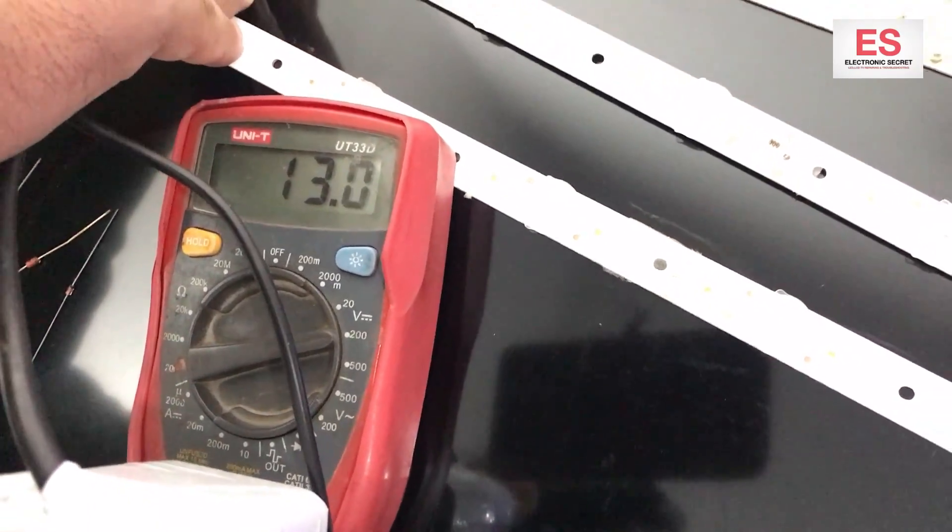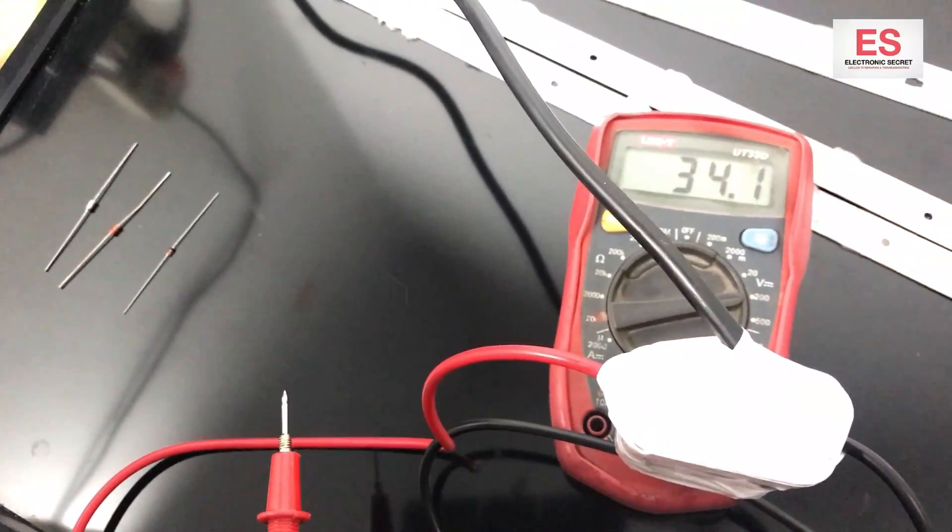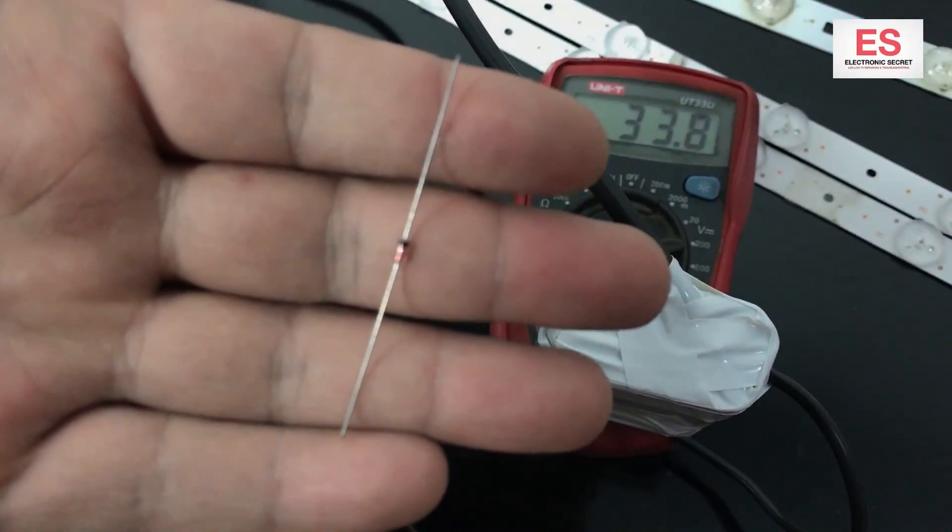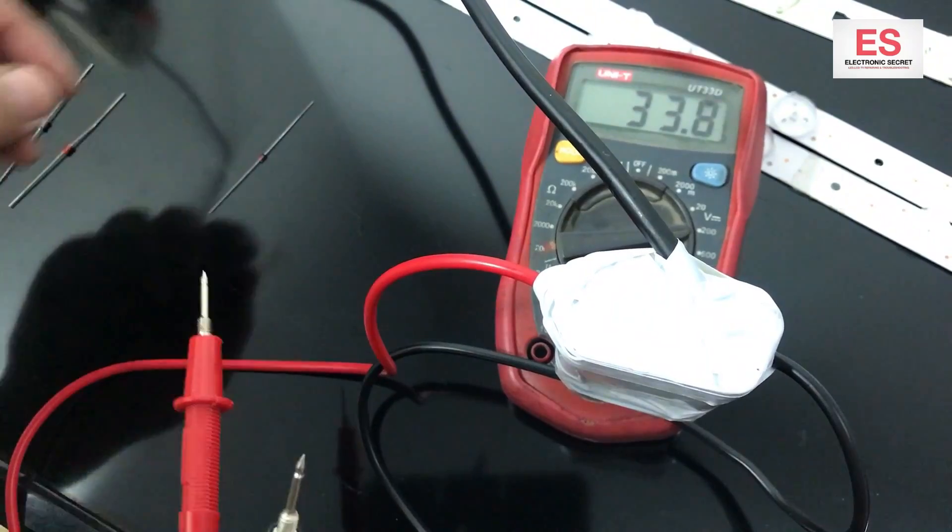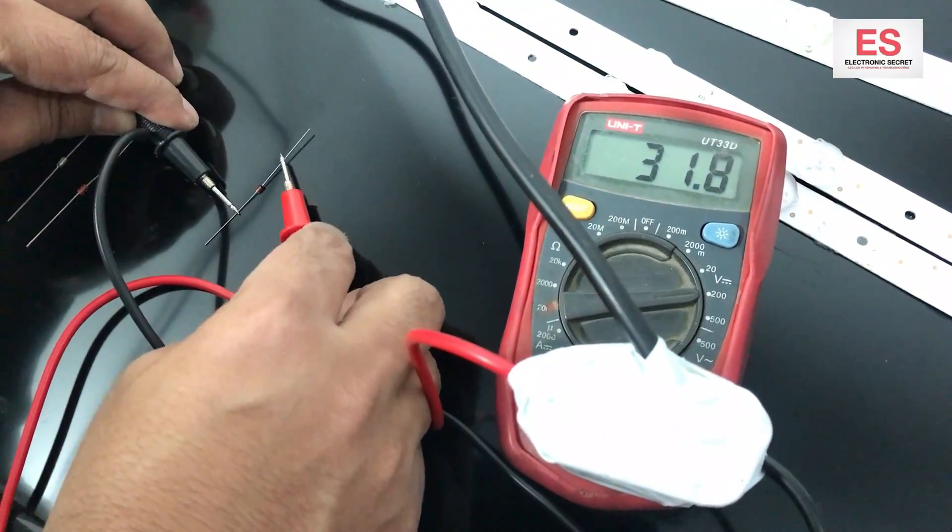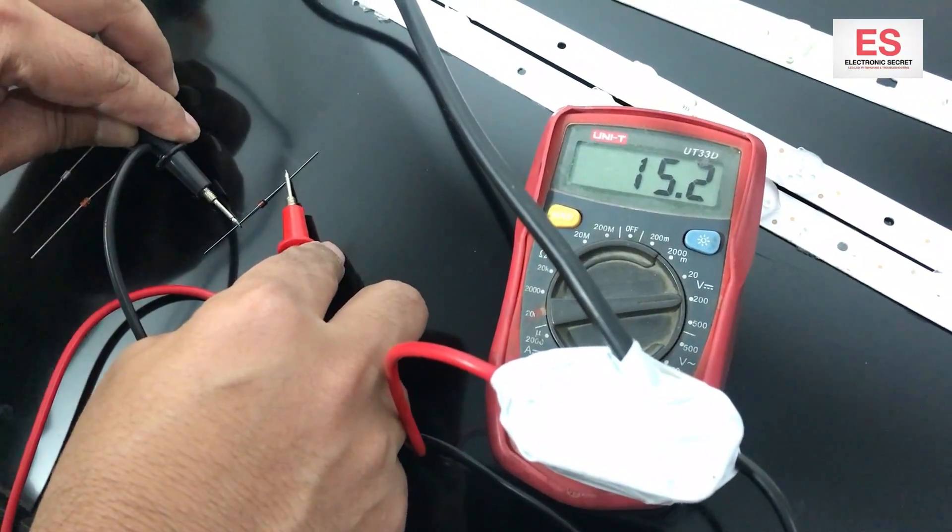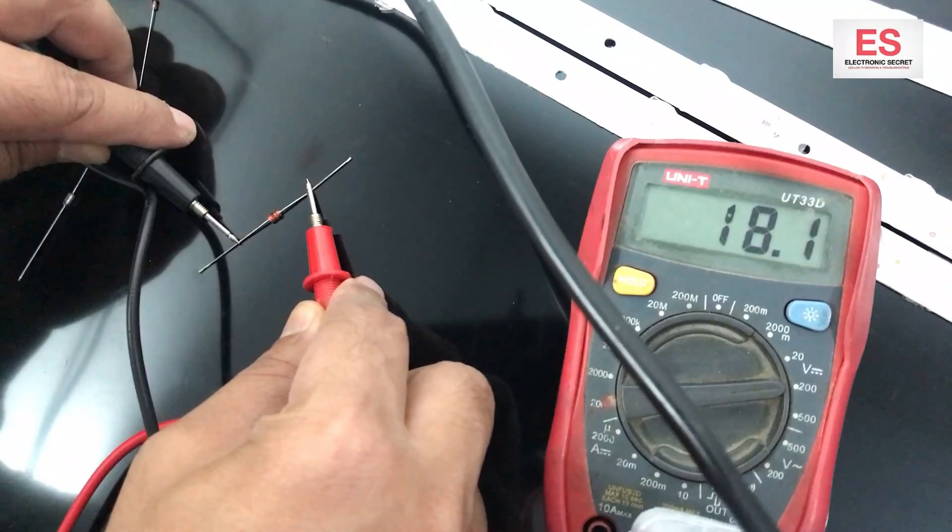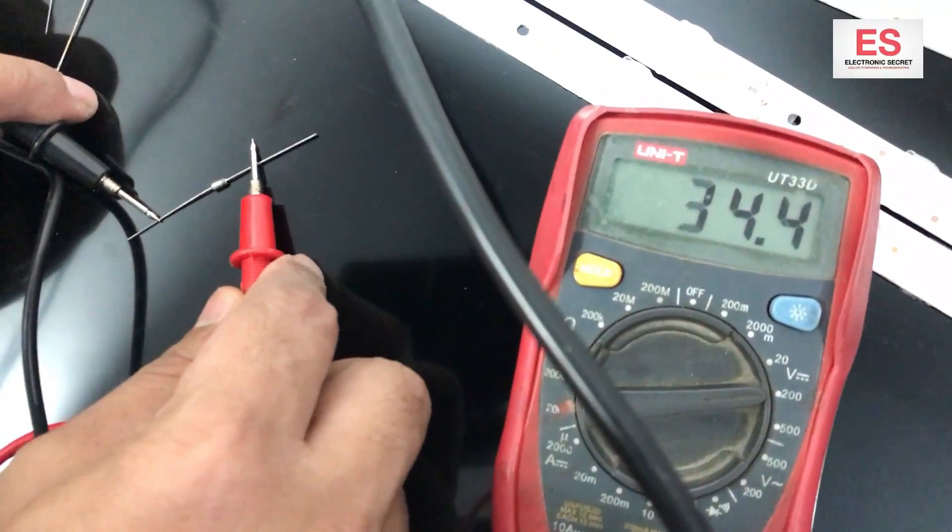And each bulb contains 3 volts. Now I will check the zener voltage. This is very good because they have very small values written on them and we cannot read it. So this is a 15 volt zener, it is 18 volt zener, and this is 12 volt zener.